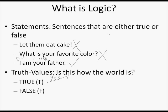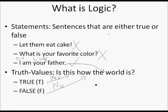If I say 'I am your father' and we check the world and it matches, then the statement is true. If however we check the world and it doesn't match — I am not your father — then the statement is false. Truth values give you information about how the world is; they tell you if the world matches up with your statement. There's a connection between statements and the world, between language and reality.